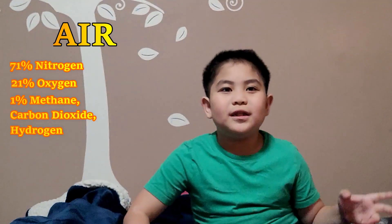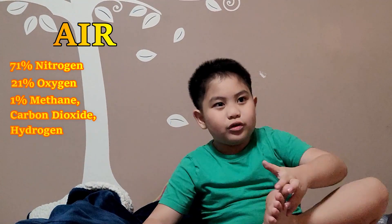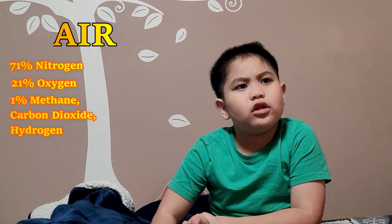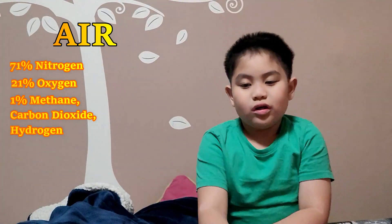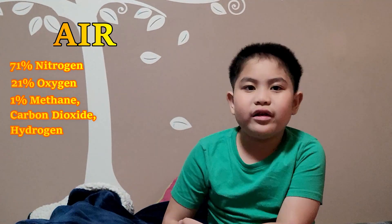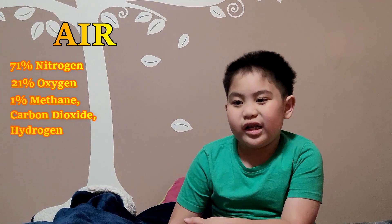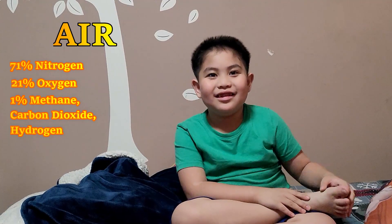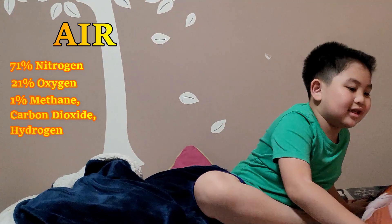Air first. Air is a gas made from other gases — about 71% nitrogen and 21% oxygen, and then there is the one percent which includes methane, carbon dioxide, and hydrogen.